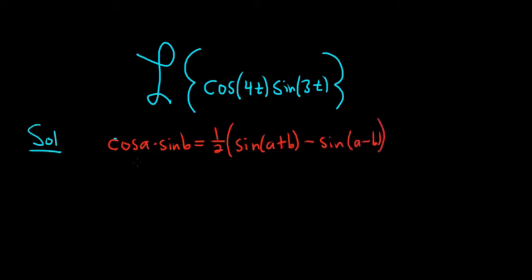Okay, so in this problem, a is 4t and b is 3t. So we have cosine of 4t times sine of 3t.